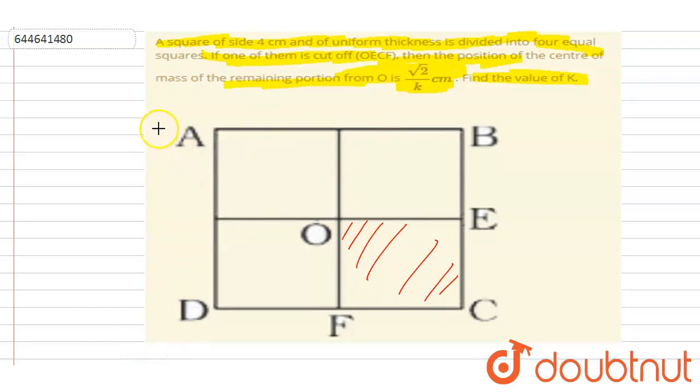If you see, this portion is removed from here. The side length is given, it is four centimeters. So the side length of this removed part will be two centimeters. If I write down this distance as a, then a is equals to two centimeters and this distance will be four centimeters.